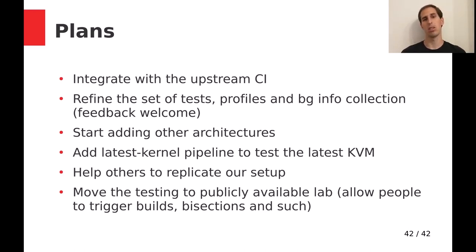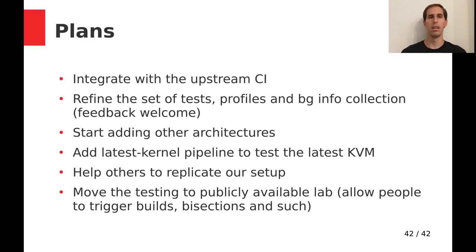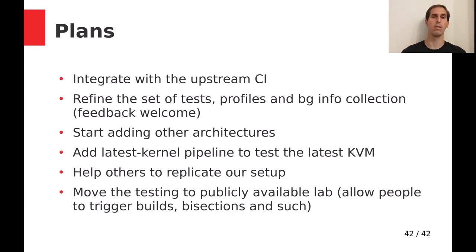One more thing is adding other architectures. I tested ARM successfully — it works basically out of the box, so it's a matter of getting the hardware and using it regularly. I also played with a latest kernel pipeline. At this point I'm running a stable version of RHEL and replacing QEMU with the current git master, which is fine for user space testing, but we're not really testing the KVM part. So it would make sense to add a pipeline that runs with the latest kernel as well as QEMU. Let me know how important that is in your eyes.